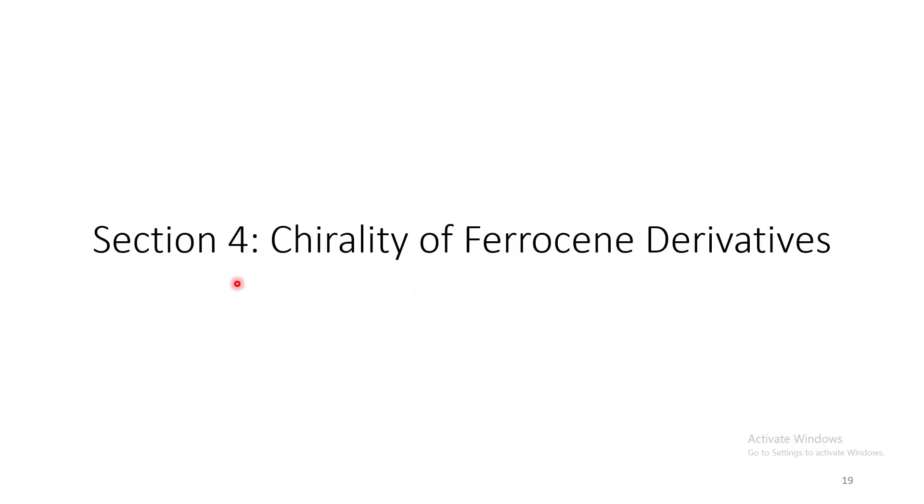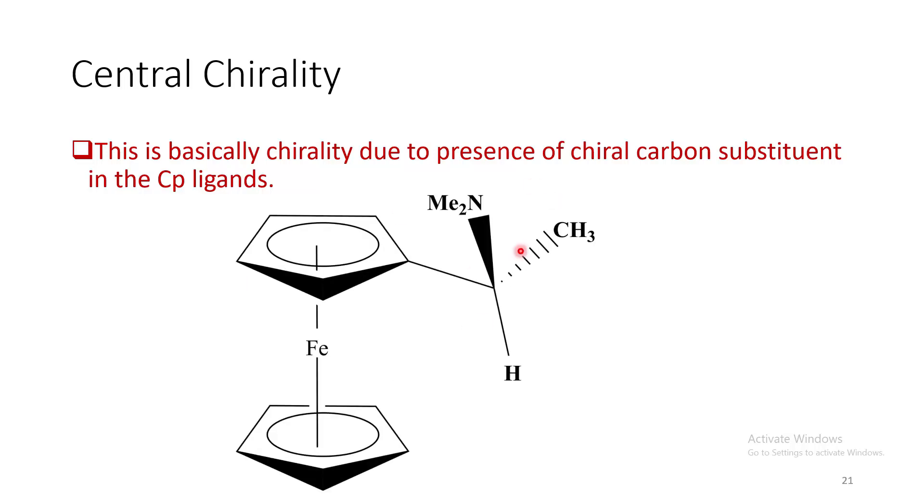Now we come to the next section, chirality of ferrocene derivatives. There are three types of chirality exist in ferrocene: central chirality, axial chirality, and planar chirality. Central chirality is nothing but the chirality due to presence of a chiral carbon substituent in the Cp ligands, like this. Here this carbon is a chiral center.